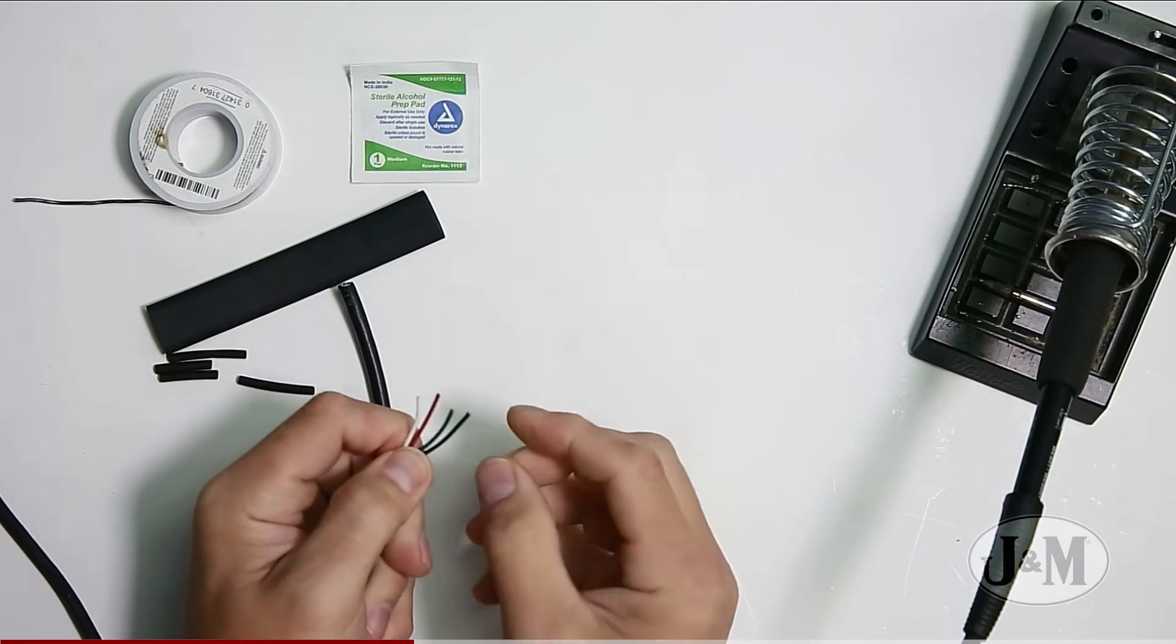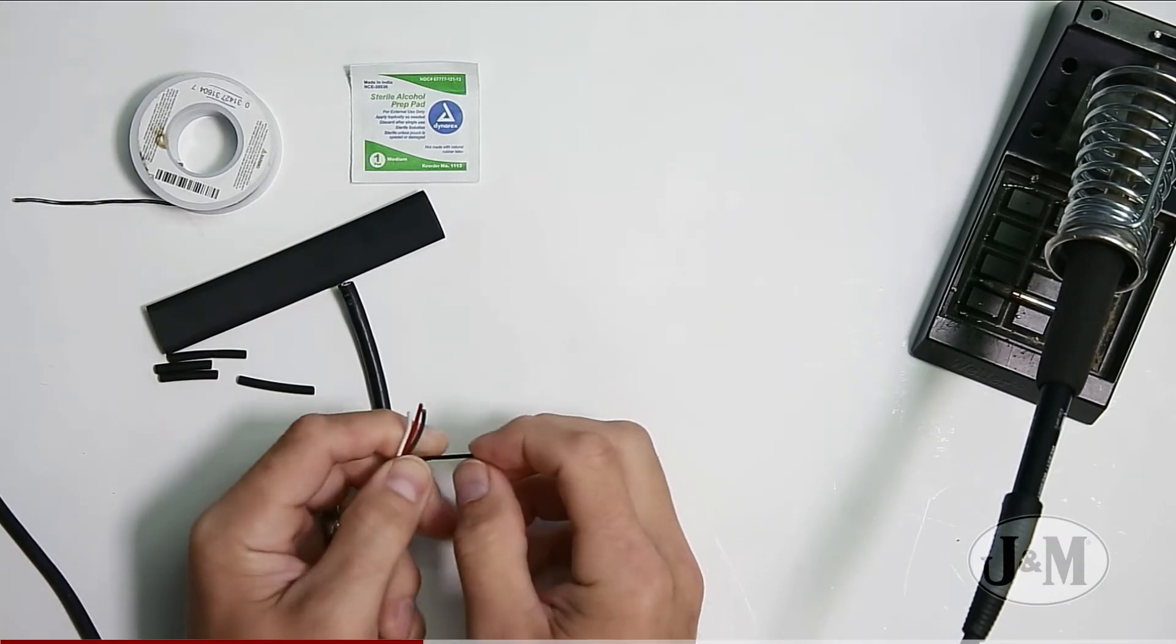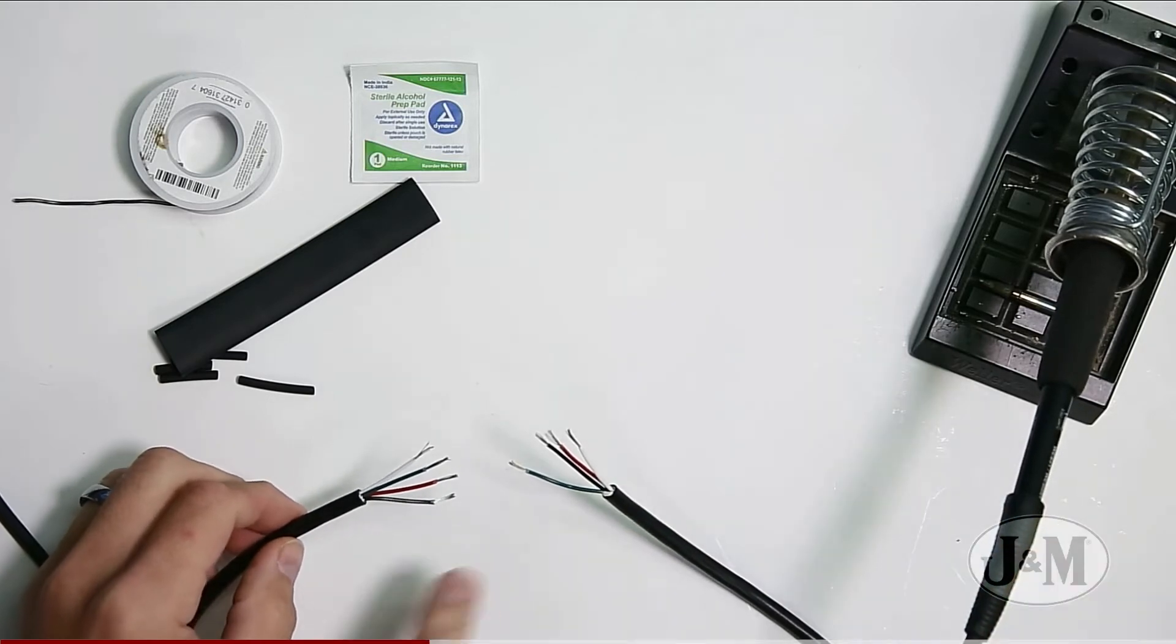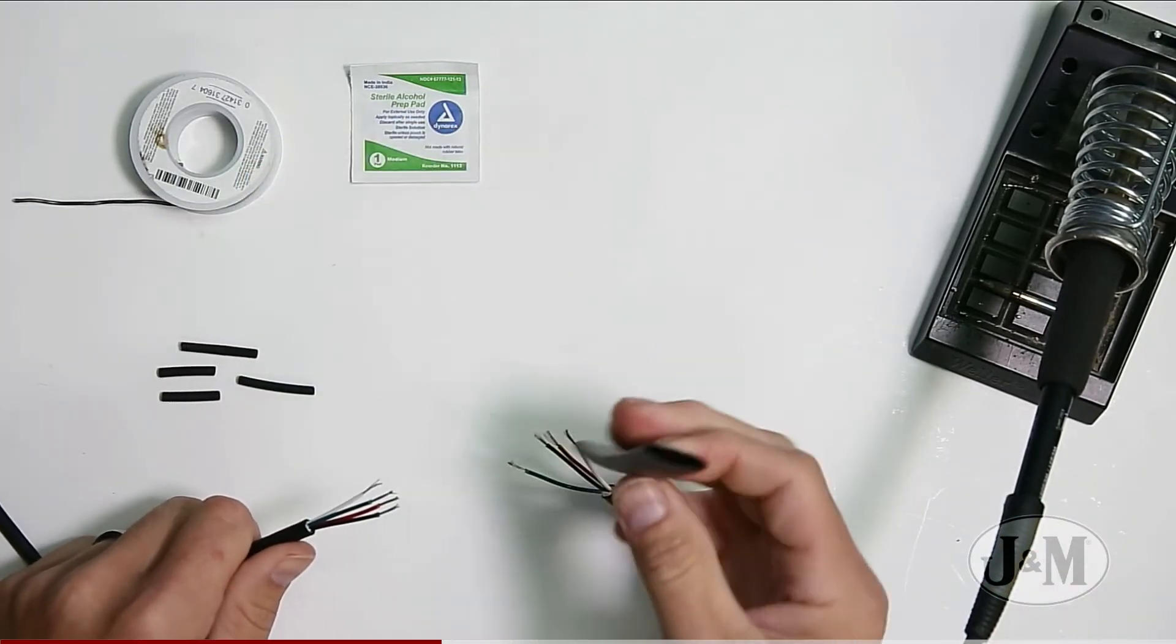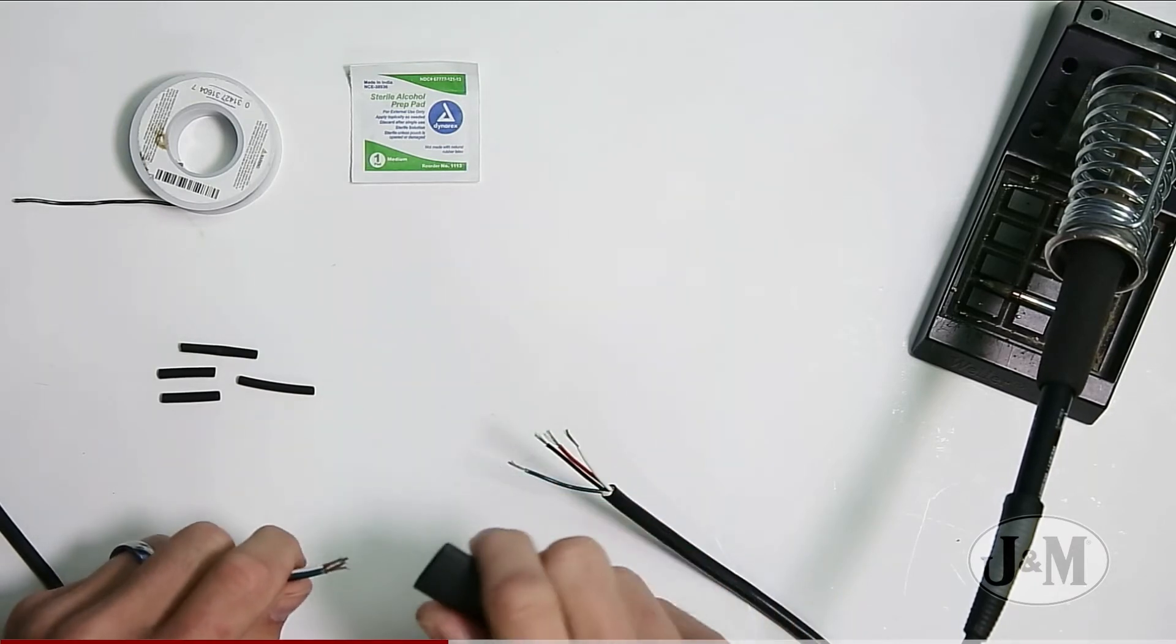Before we actually solder anything together it is very important to put your three quarter inch piece on ahead of time. So we are just going to slip that on.